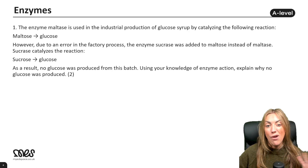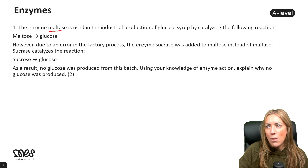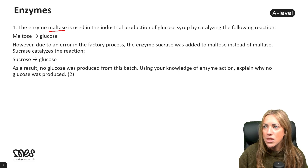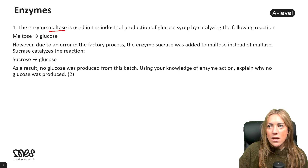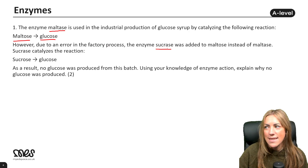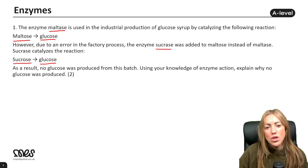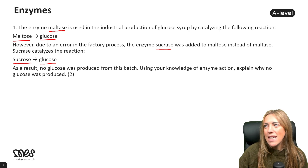Let's look at an exam question to apply our enzyme knowledge. The enzyme maltase — we can recognise it's an enzyme because it ends in '-ase' — is used in the industrial production of glucose syrup. It hydrolyzes maltose into glucose. Due to a factory error, sucrase was added instead of maltase. Sucrase catalyzes the hydrolysis of sucrose into glucose, not maltose.